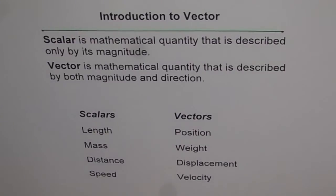So vector is a mathematical quantity that is described by both magnitude and direction. That is what vector is. So when we say what is a vector, we say well it is something which has both magnitude and direction.